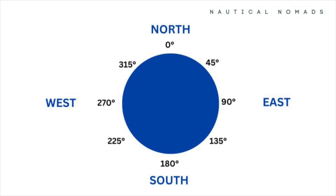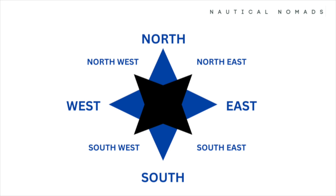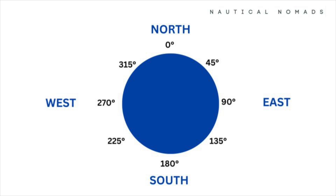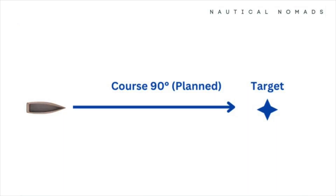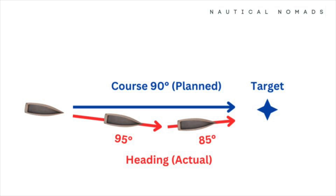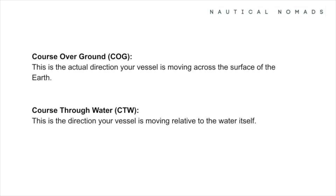To wrap up, let's revisit the key concepts from this lesson. We began with the basics of direction — cardinal points north, south, east, and west form the foundation of navigation, along with intercardinal directions measured in degrees on a 360-degree circle. We explored bearings, which measure the angle between two points, your course as your intended path, and your heading as the direction your vessel is actually pointing. We also introduced course over ground and course through water, explaining how external forces like wind and currents affect your actual movement compared to your intended course.